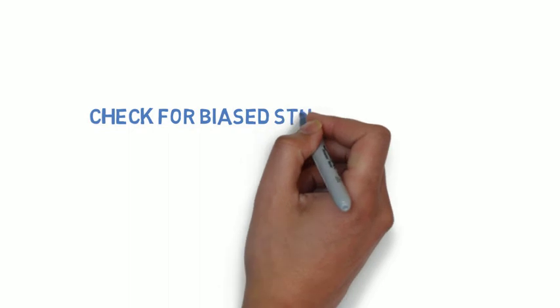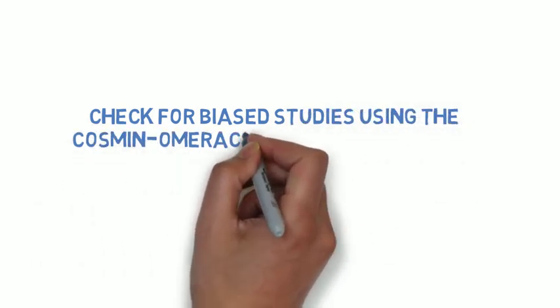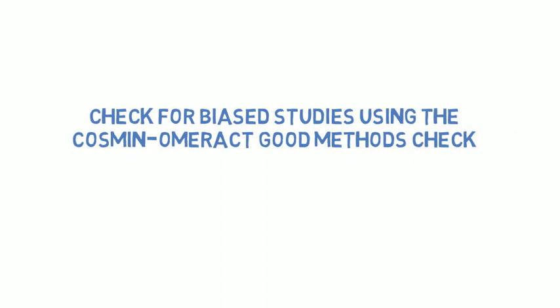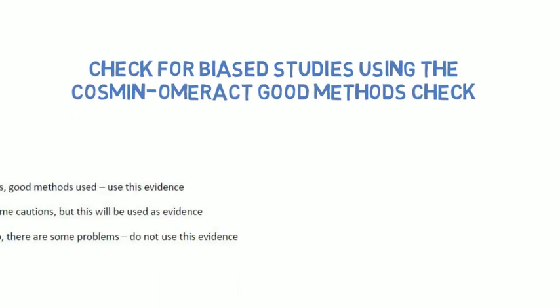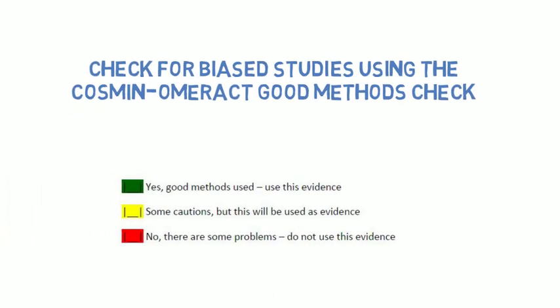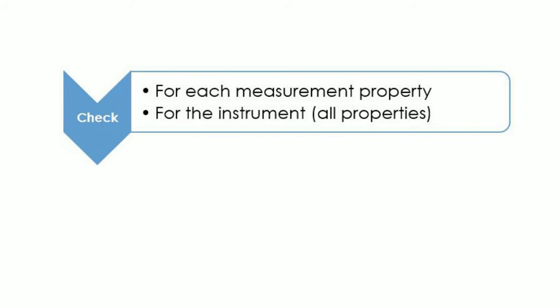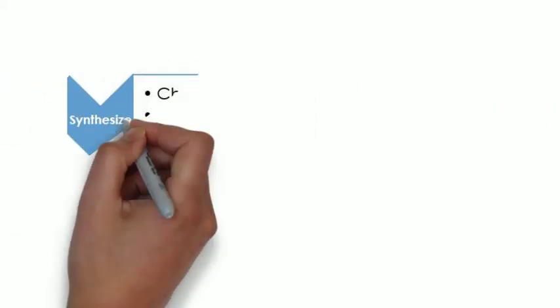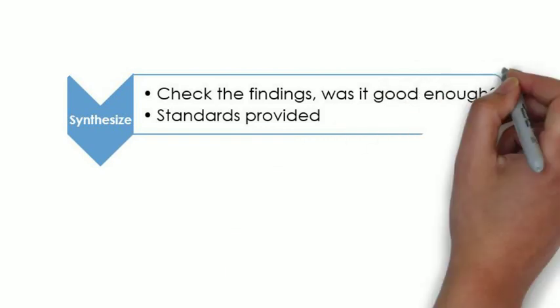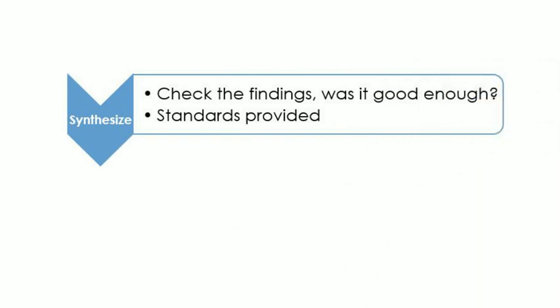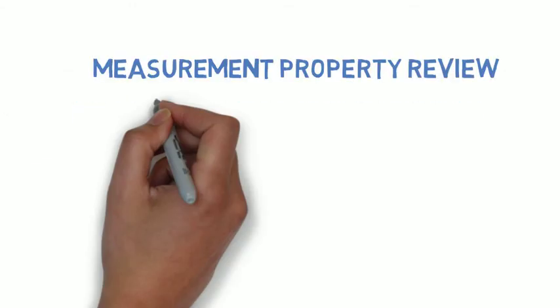We use a tool called the COSMIN-OMRACT Good Methods Check to look for serious methodological flaws in the way a study was performed. We check to see if a piece of evidence is trustworthy enough to be included in the review. If we think a study has too many problems with its methods, we will not use this piece of evidence. Next, the working group looks at the findings of those studies that have used good methods and note the results. Were they good enough to say that an instrument demonstrates that a measurement property is met? These results are then synthesized across the studies for each measurement property.